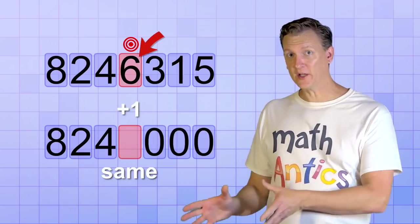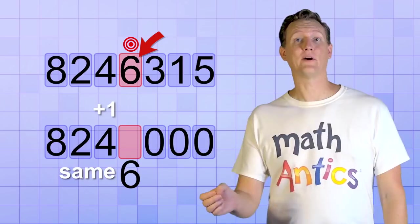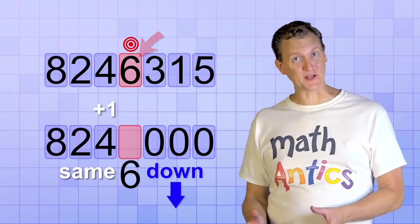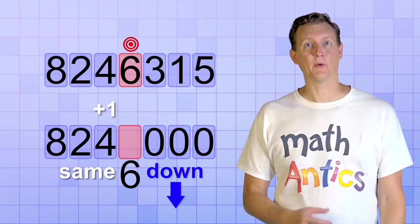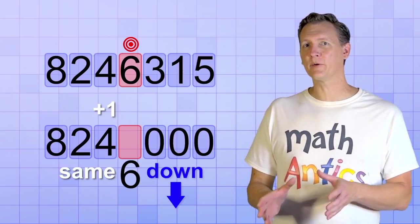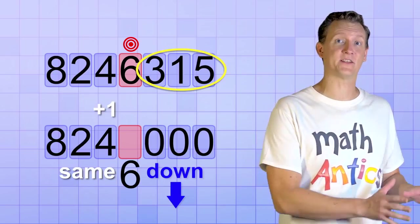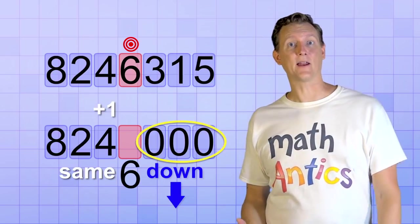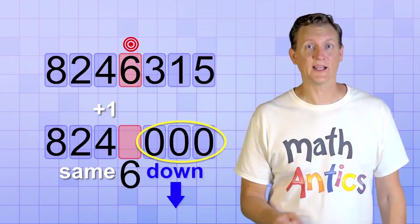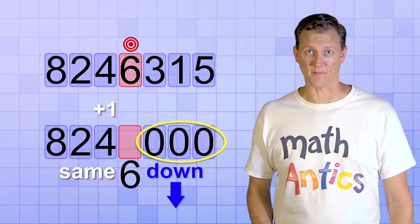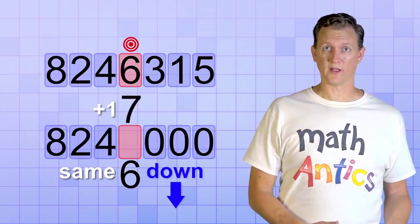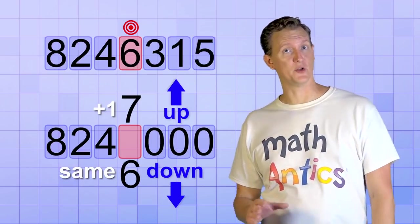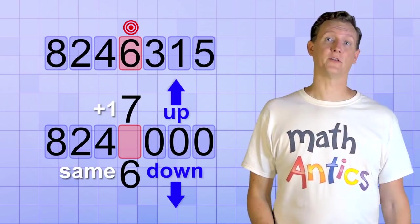If we keep that target digit the same, that's called rounding down, which might seem strange at first. I mean, how can leaving the digit the same be rounding down? But remember, we're going to automatically replace all of the smaller places with zero. And doing that makes a rounded number smaller, even if the target digit stays the same. On the other hand, increasing the target digit by one is called rounding up, since the new rounded number will be larger than the original number.